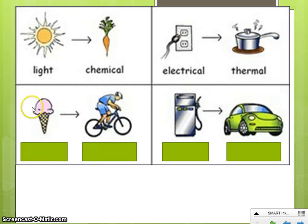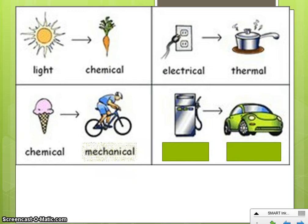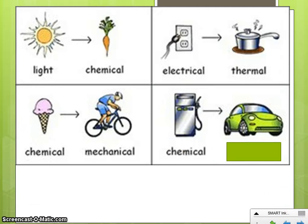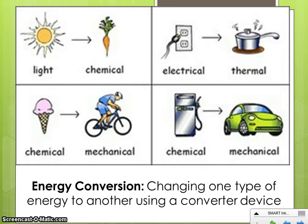When you eat an ice cream cone, that ice cream cone has chemical energy, and you change that chemical energy into the energy of motion, which is mechanical energy. When you put gasoline in your car at the gas pump, the gasoline has chemical energy, and your car converts that chemical energy into mechanical energy so it can move. Any time energy changes from one type to another, we call that an energy conversion.